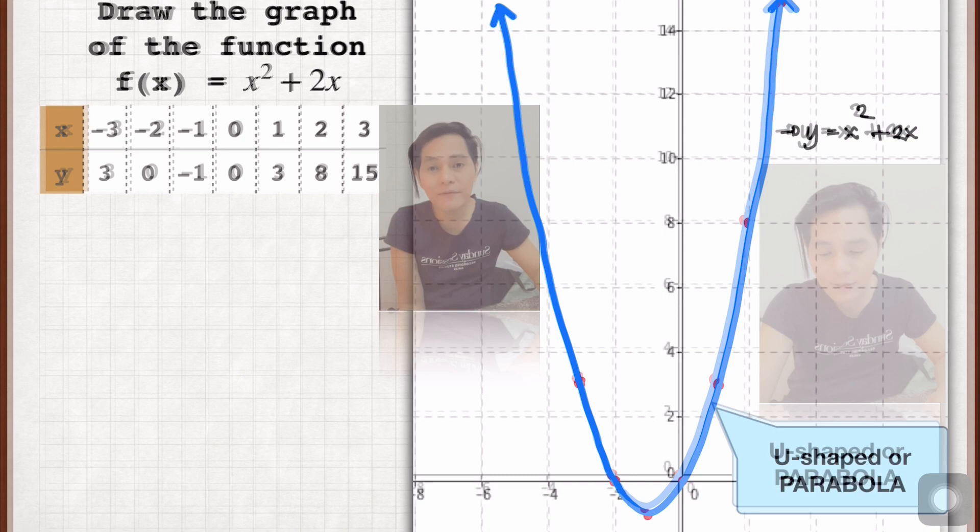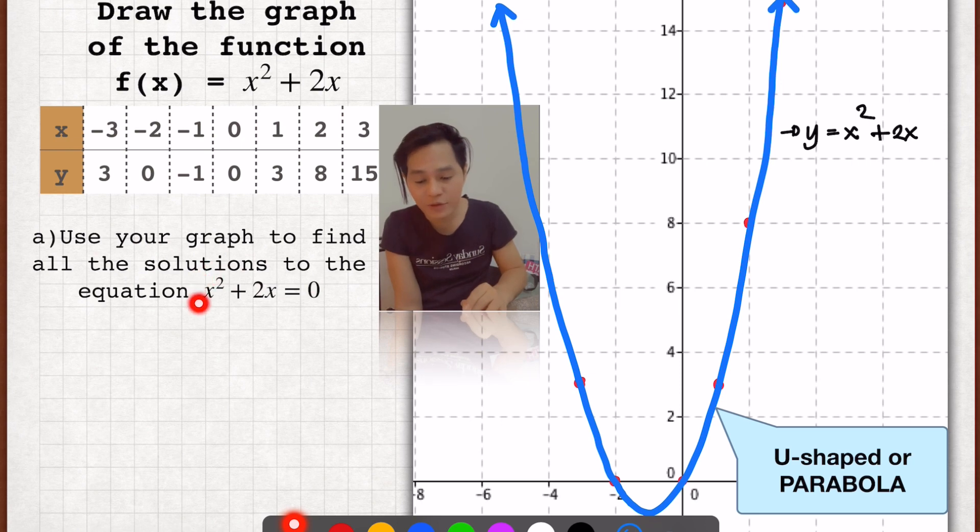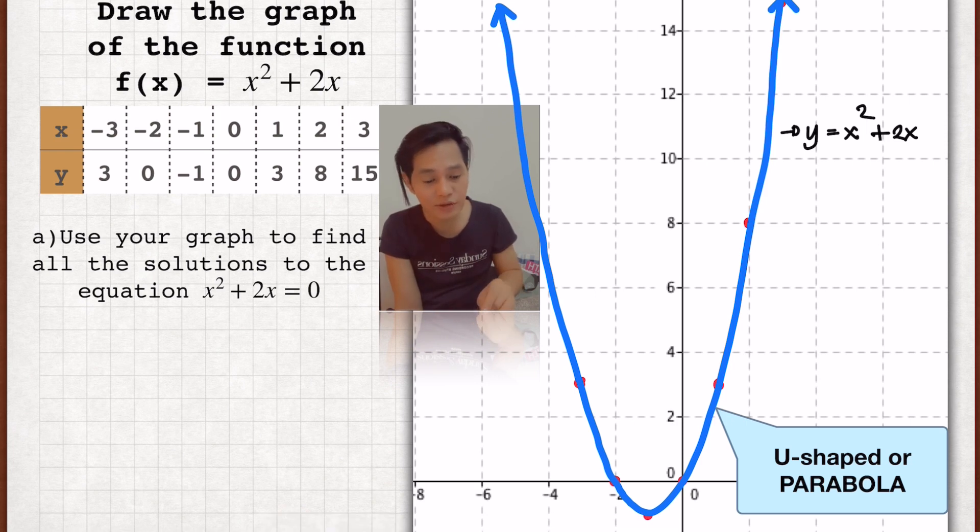Now here's a follow-up question: use your graph to find all the solutions to the equation x squared plus 2x is equal to 0. So now, how are we going to find out the solutions? Just simply look at those points that intersect the x-axis.